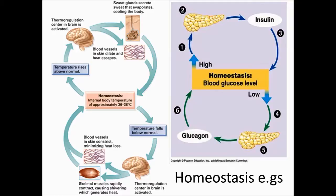Homeostasis examples. Blood glucose or sugar levels are controlled by the hormones insulin and glucagon.